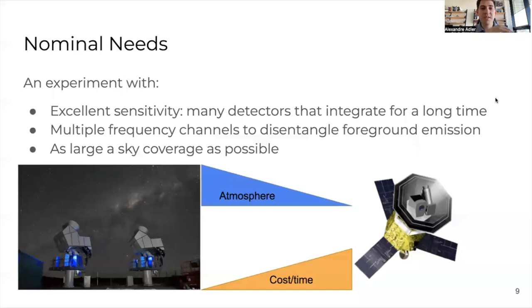What we need is an experiment with a lot of detectors that can integrate the sky for a long time to bring down the noise in the map, multiple frequency channels to get rid of the galactic foregrounds and be able to image the CMB, and a very large sky coverage. If you're on the ground, you can have lots of detectors, the most cutting edge technology, but you're limited in your frequency channel coverage by the atmosphere and you're limited in your sky fraction by what is observable from a given point at a given latitude over a year.